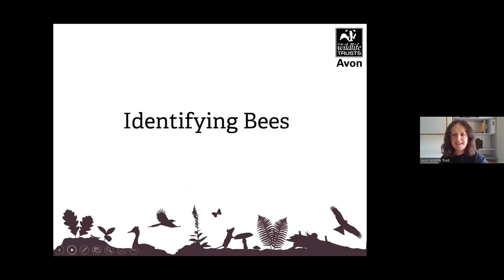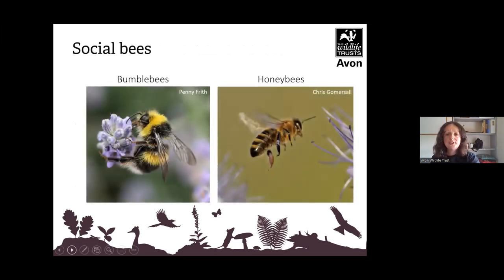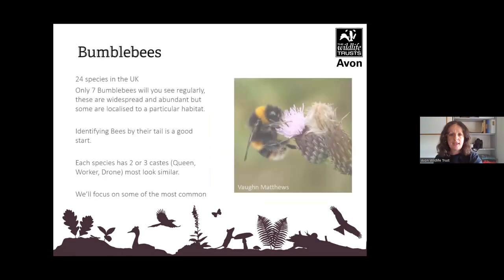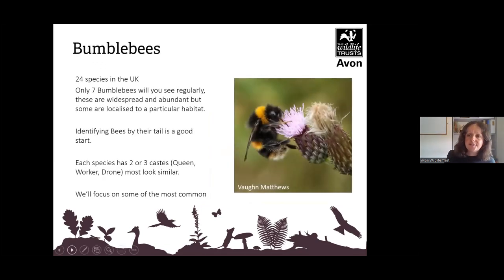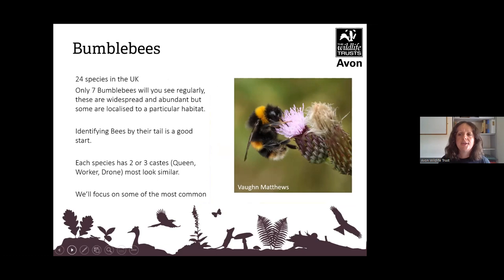Should we get down to identifying bees? We have social bees, which are the bumblebees and the honeybees. There are 24 species of bumblebee in the UK, with seven that are the most common you'll see in your garden and in parks. A good way of identifying bees is by their tail — tails vary between bees. They have two or three castes, meaning family members.